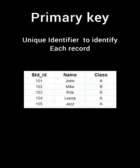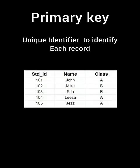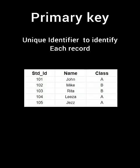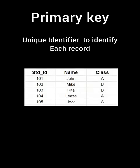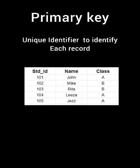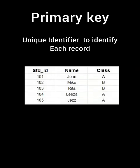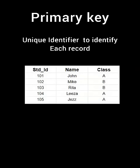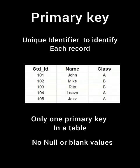A primary key is a unique identifier used to identify each record in a table. Consider this table here — the student_id column values are unique for each record. With the help of this student_id column, we can easily access any record we want from the table. The student_id is a primary key. There should be only one primary key in a relation, and it should never have any null or blank values.